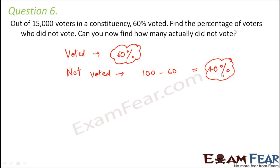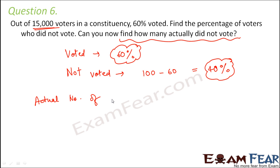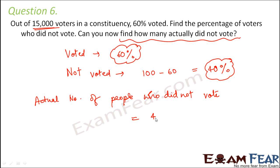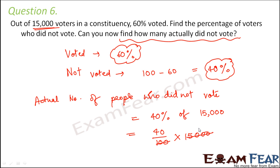Can you now find how many actually did not vote? The total number of voters in reality is 15,000. So the actual number of people who did not vote is 40 percent of 15,000, which equals 40 by 100 into 15,000 — that is 6,000. So 6,000 people actually did not vote.